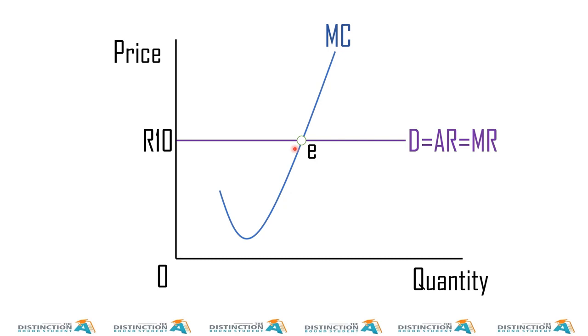So how many units should this firm produce? Well from E we simply draw a line going down and in this case is 10 units. So far what we know is that the product is 10 rand and the firm is making 10 units and these 10 units can be 10 units per hour, 10 units per day, 10 units per month whatever the case is but all we know is that the product is 10 rand and the firm is making 10 units.